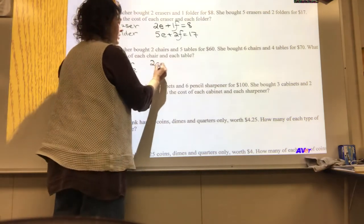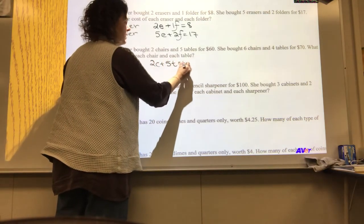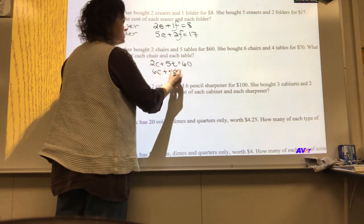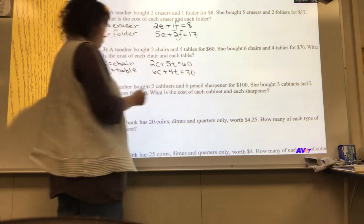So two chairs and five tables. Little tail there. Equals 60. And we have six chairs plus four tables is 70. I hope you guys got that one too.